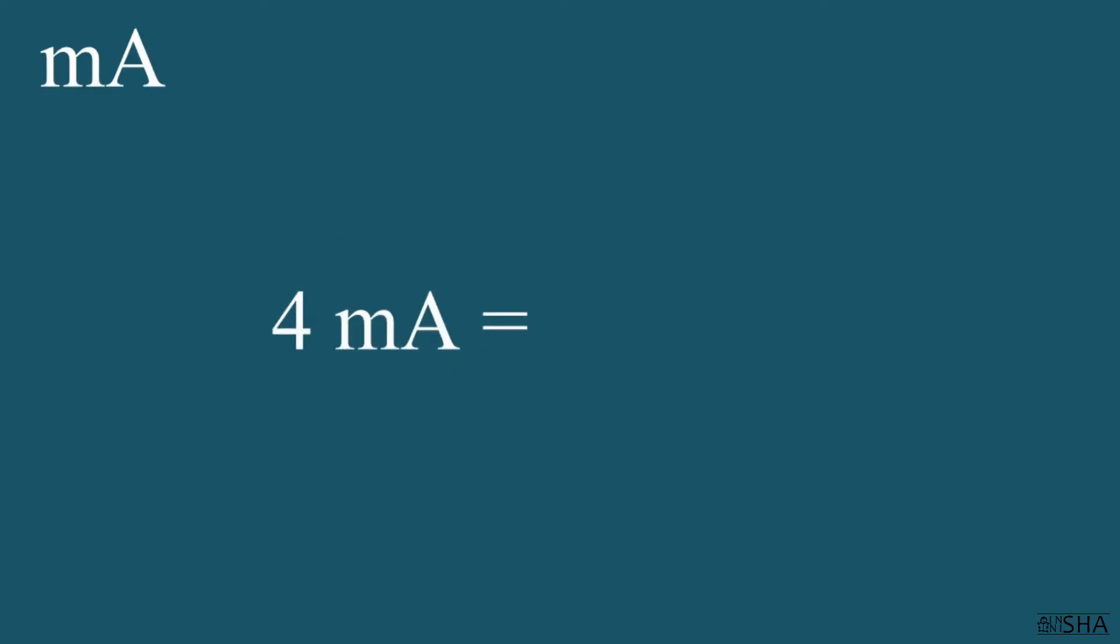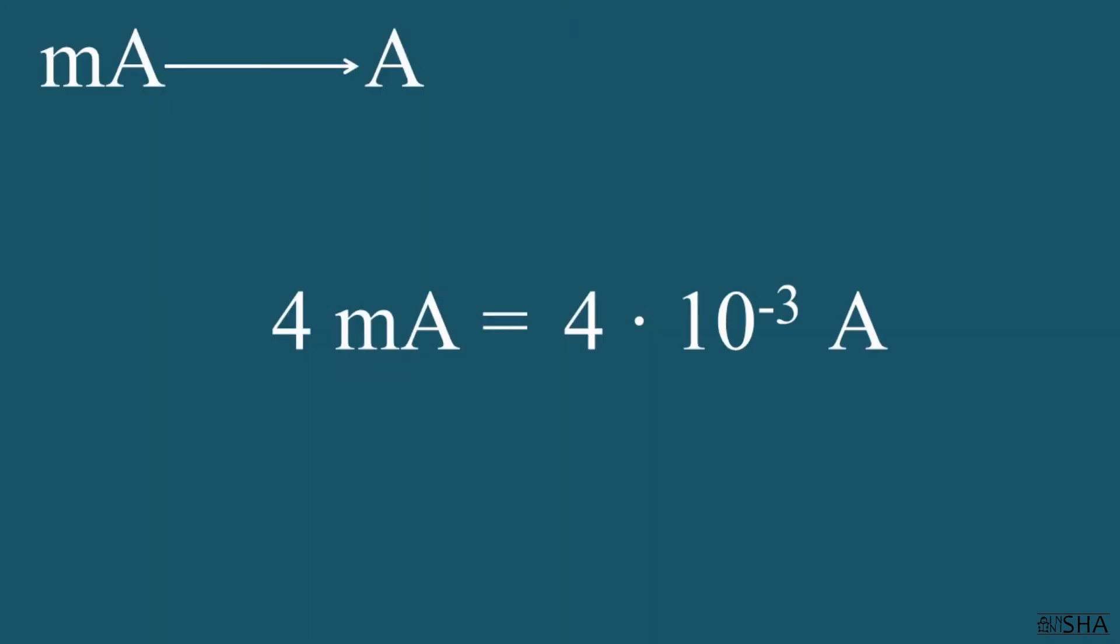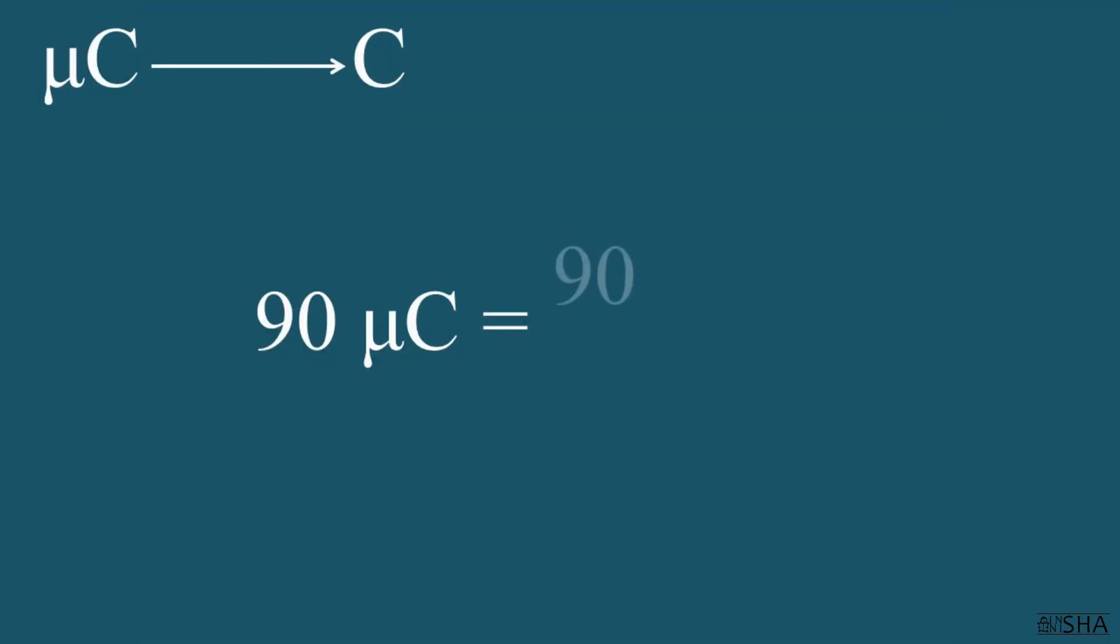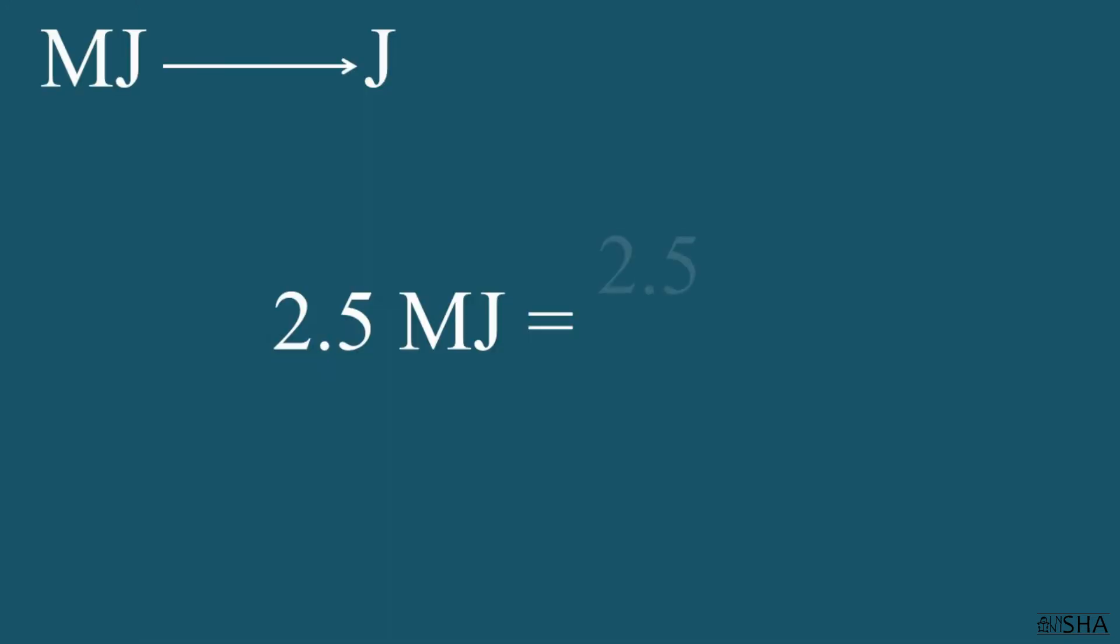Convert four milliamperes to amperes, so we write four and multiply it by the prefix milli, ten to the negative third power. 90 micro coulombs equal ninety times ten to the negative six power coulombs. 2.5 megajoules equal 2.5 times 10 to the 6th power joules. 0.3 kilopascals equals 0.3 times 10 to the 3rd power pascals.